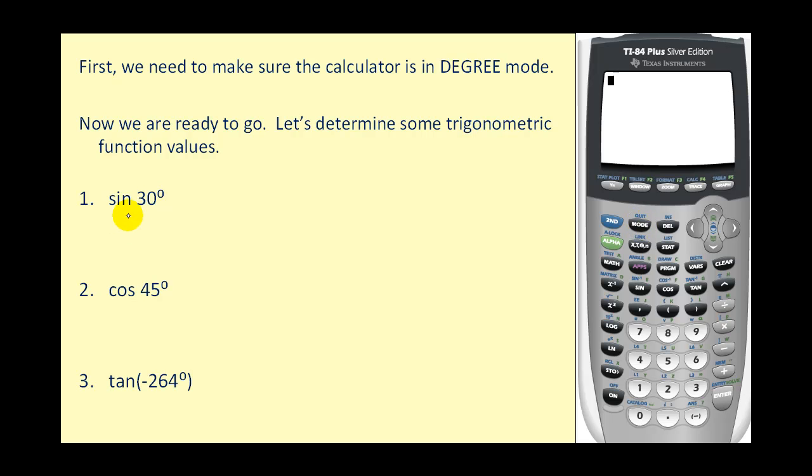If we want to find the sine of 30 degrees, we simply press the sine key, 30, close the parentheses, and press enter. And we see that it's 0.5, which of course is equivalent to one-half.